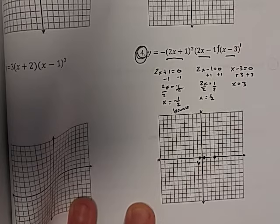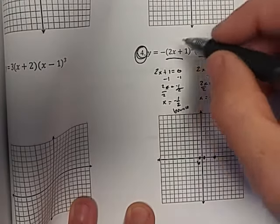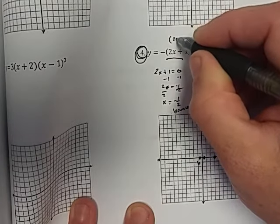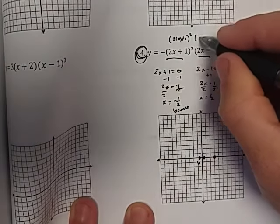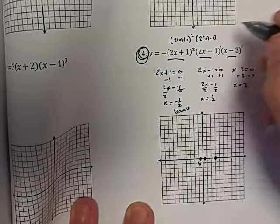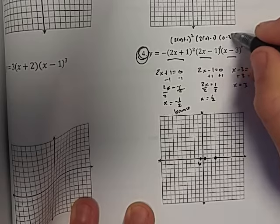I also need to figure out what my y-intercept is going to be, and to find your y-intercept, you plug in zero for x. So this basically becomes two times zero plus one, being squared. And this becomes two times zero minus one, and this becomes zero minus three.